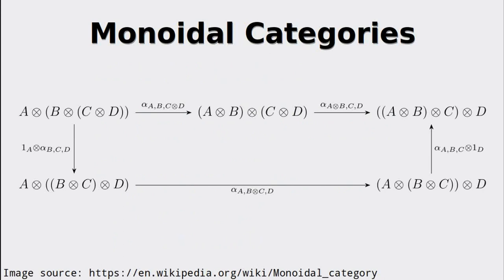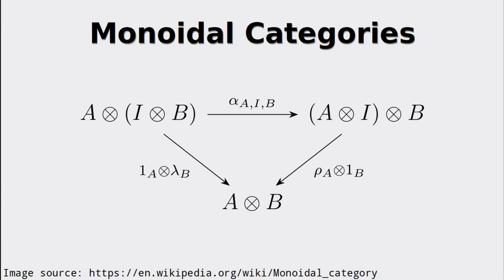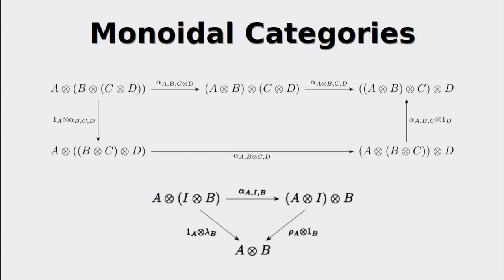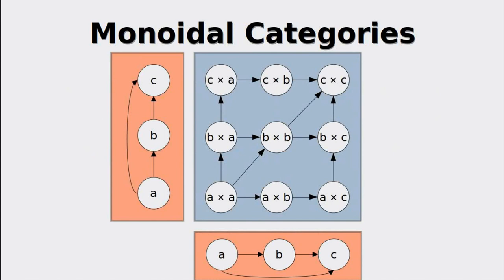The reason we need these to be transformations is that often the tensor product is not really associative but could be made associative by doing an isomorphic transformation. The associativity of the tensor product is illustrated in this commutative diagram. It is not awfully important to understand this diagram but it is part of the definition for monoidal categories. In the same way, we can illustrate the consumption of the identity object. When thinking of an example of a monoidal category, we have to make sure that these diagrams still hold true.